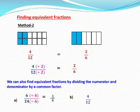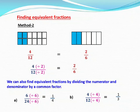Let us see the next example: 4 by 12. Find a common factor for 4 and 12. Both 4 and 12 are even numbers, so 2 is a common factor. Also, 4 is divisible by 4 and 12 is also divisible by 4, so 4 is also a common factor of 4 and 12. We got two common factors: 2 and 4. We can divide either by 2 or by 4. When we divide by 4, numerator 4 by 4 equals 1, and denominator 12 by 4 gives 3. So 1 by 3 is an equivalent fraction of 4 by 12.